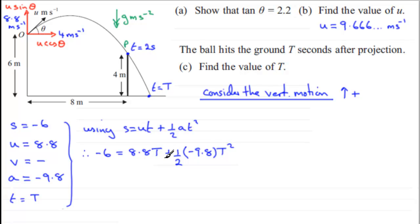Okay, so we can clean this up. 2 will go into the minus 9.8 minus 4.9 times. So we've got essentially a quadratic equation in T. I'm going to start with a positive T squared term. So I'm going to add 4.9 T squared to both sides and subtract 8.8 T from both sides. We therefore have 4.9 T squared minus 8.8 T minus 6 equals 0.